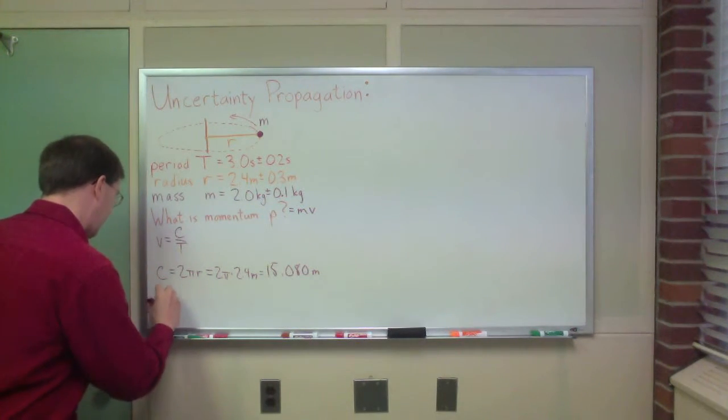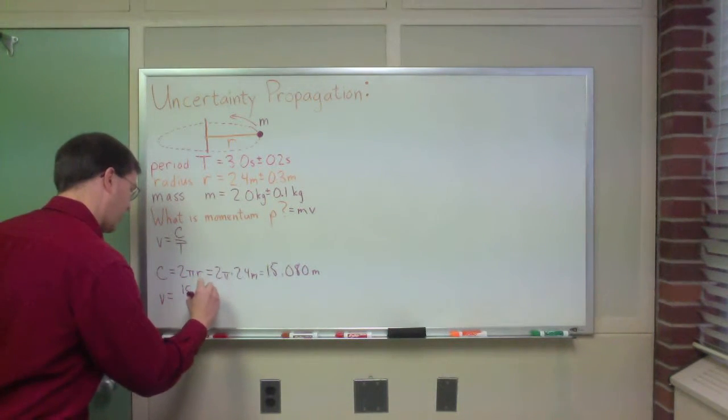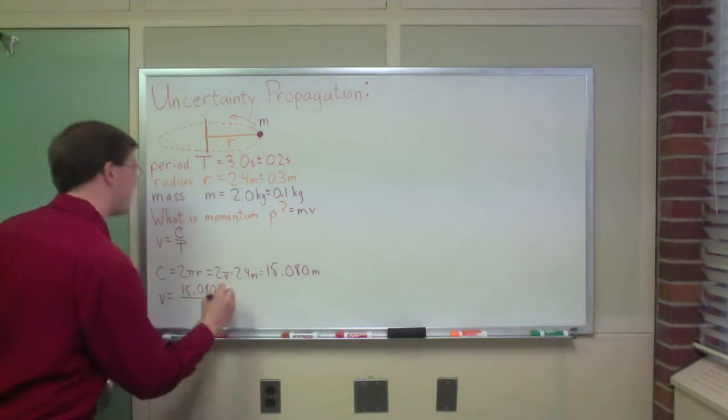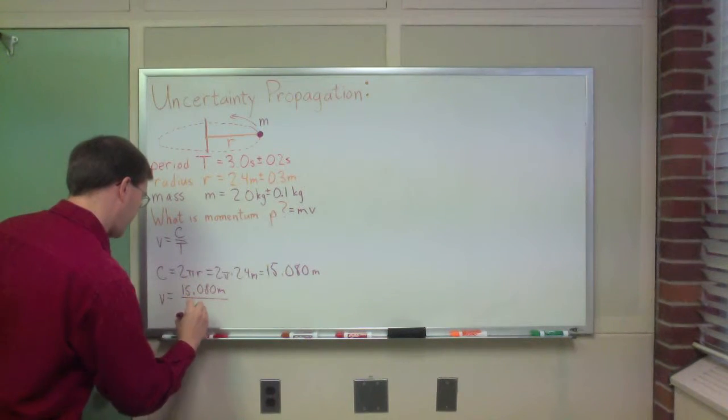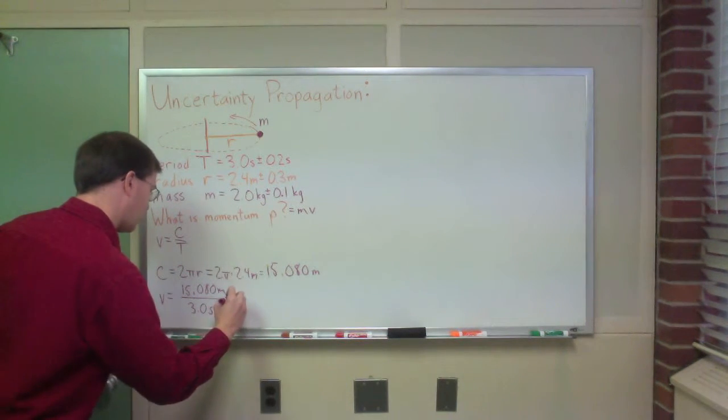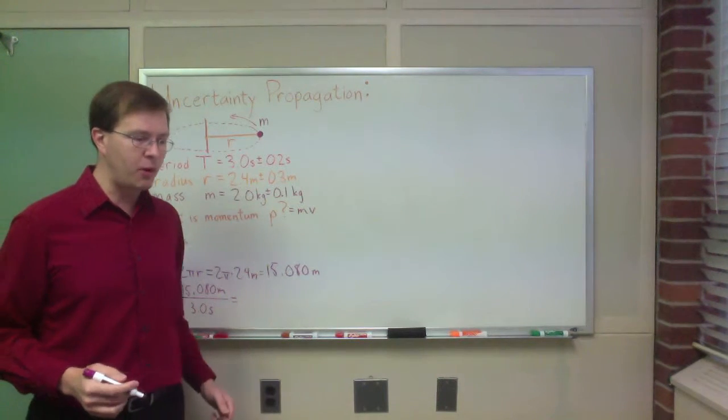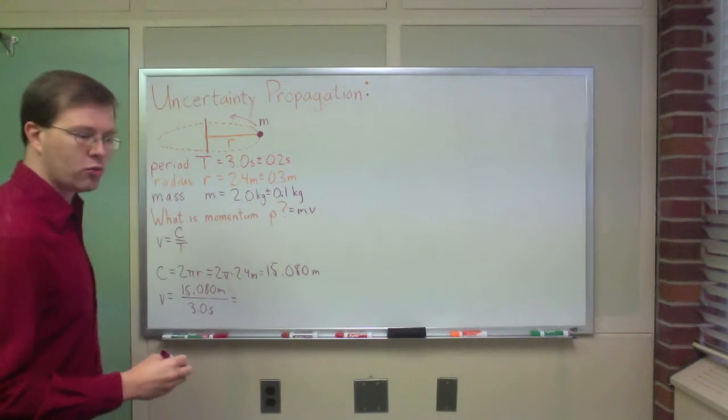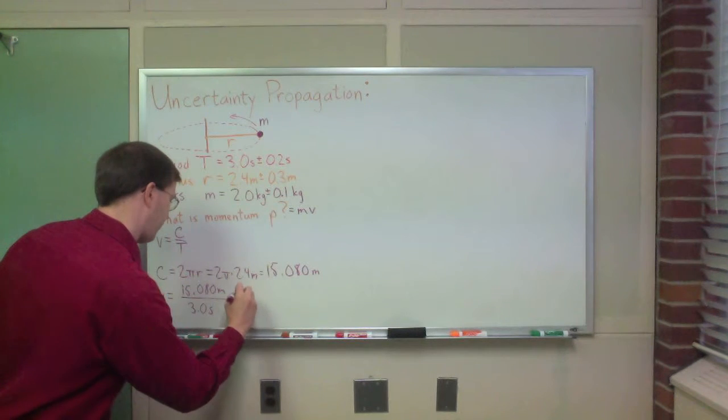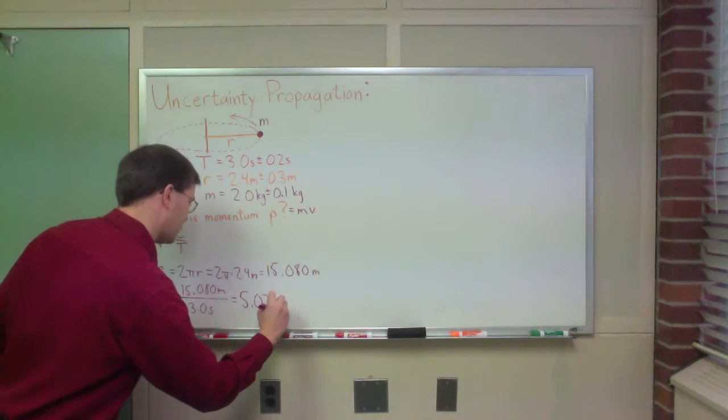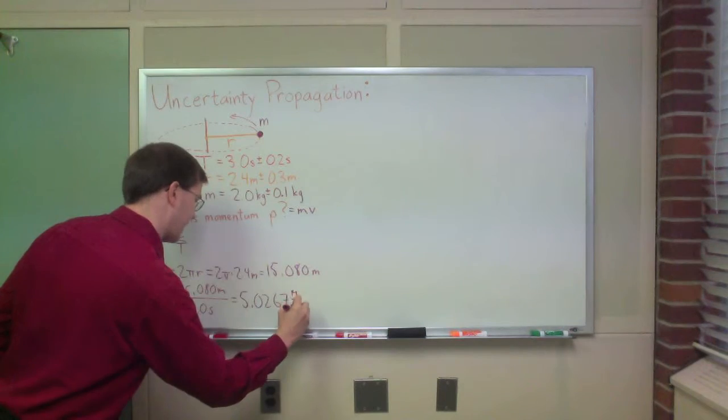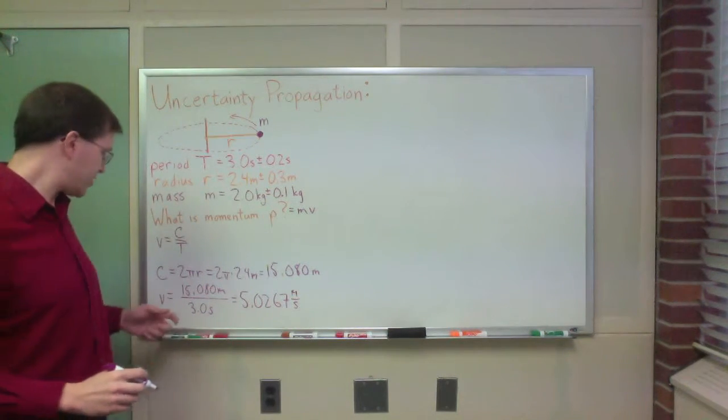Then the speed I get is going to be that 15.080 meters divided by my time, 3.0 seconds, which gives me, when I divide that out, the speed I come up with is 5.0267 meters per second. Units keep working here, that's good.